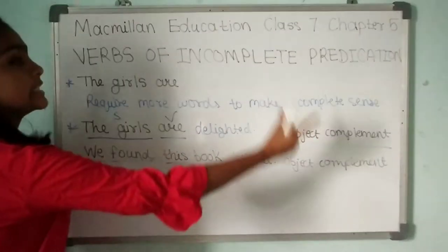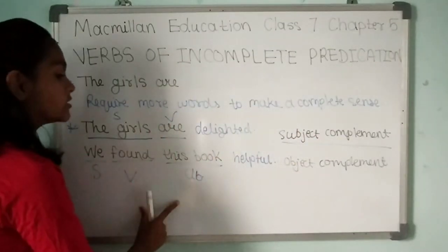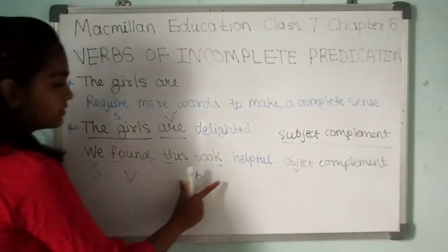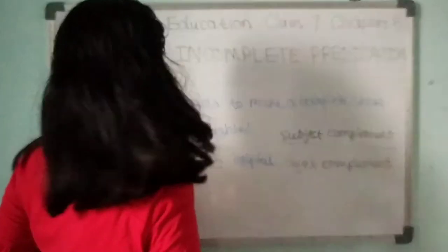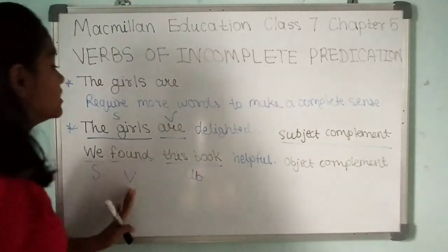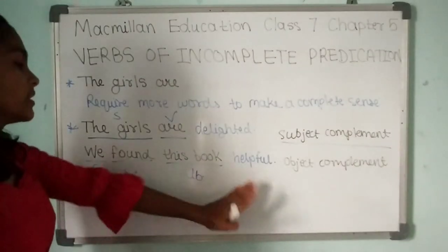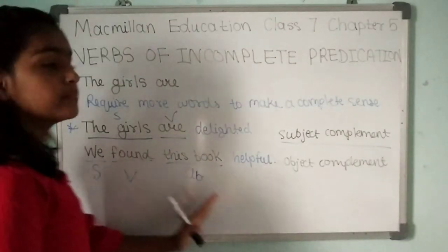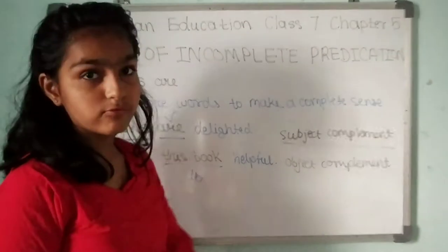'Helpful' is describing the object — 'this book.' So in the sentence 'We found this book helpful,' 'helpful' describes the object, making it an object complement.